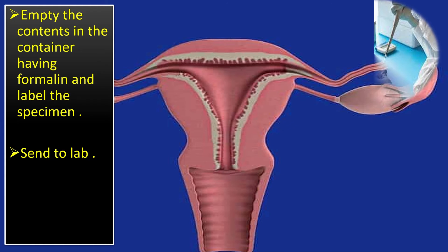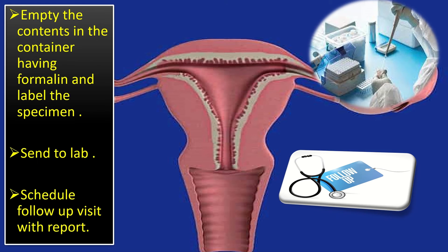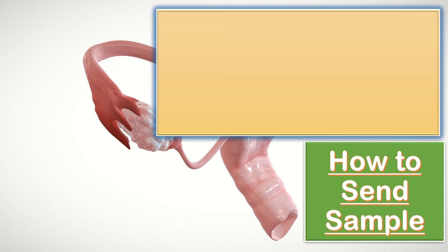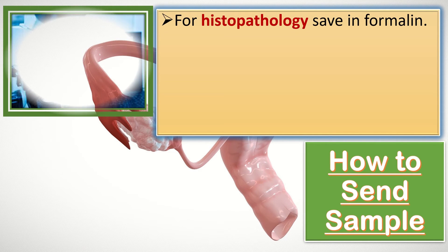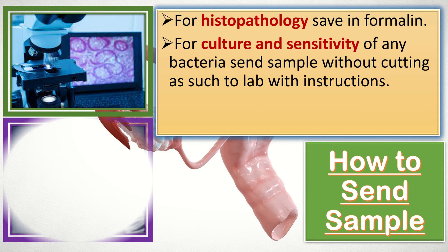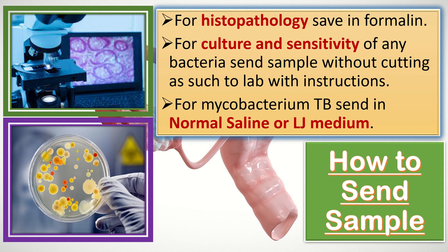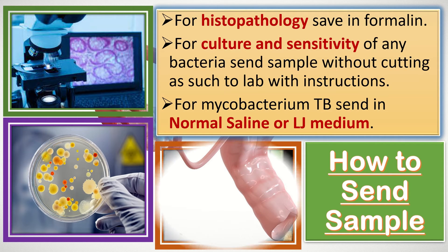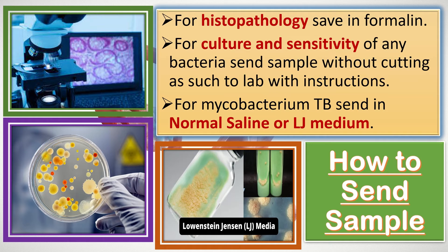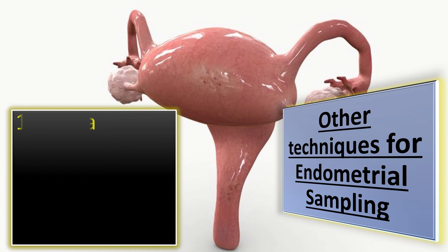Empty the contents into a container with formalin, label the specimen, and send the sample to the lab. Schedule a follow-up visit with the report. For histopathology, preserve the sample in formalin. For culture and sensitivity, send the medium without cutting as-is to the lab with instructions. For mycobacterium tuberculosis, send in normal saline or Lowenstein-Jensen medium.